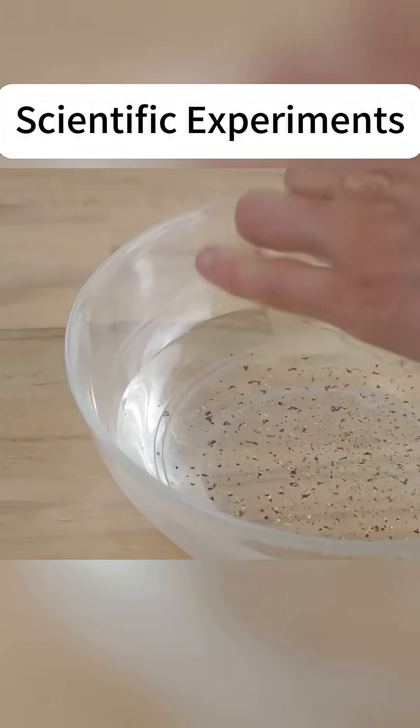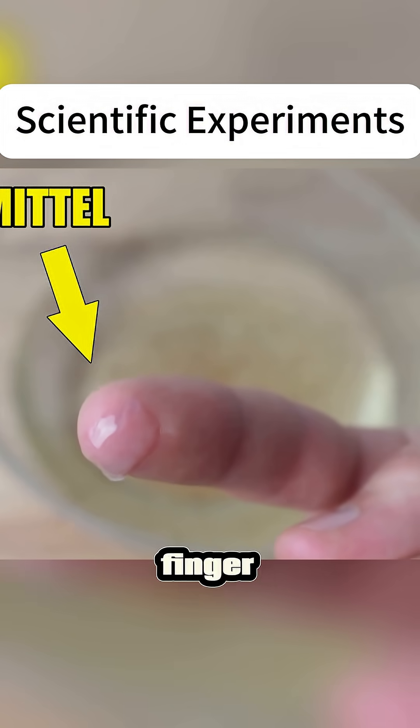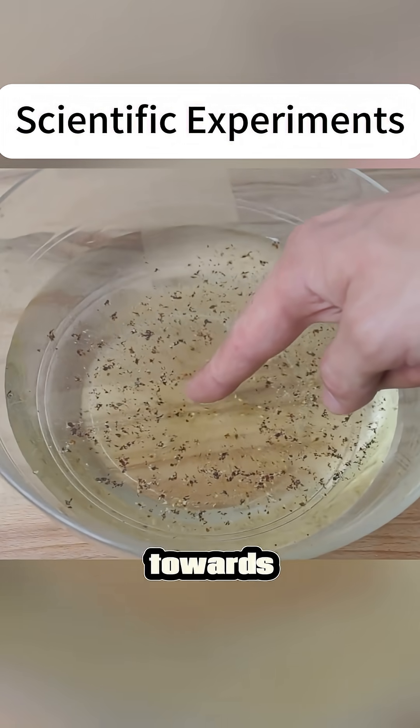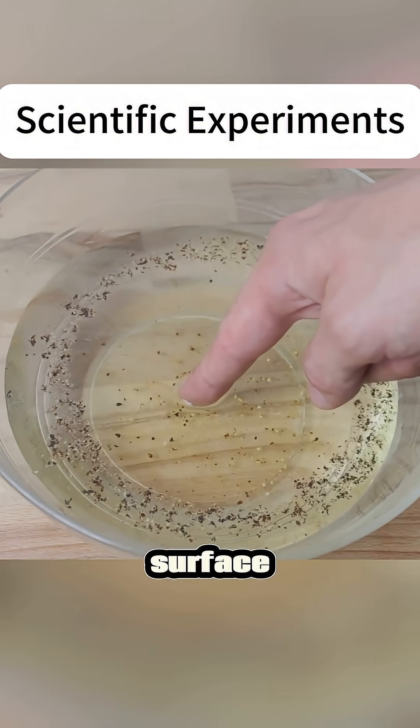In a glass bowl full of water, sprinkle black pepper evenly. Then a finger coated with dish soap gently touches the water's surface, and the black pepper magically scatters rapidly towards the edges of the bowl. This is the surface tension of water.